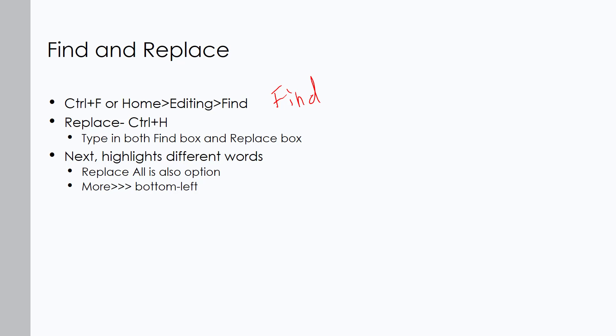The shortcut for Replace is Control+H, which opens the Replace box. Under the Home tab in the Editing group you can find both the Find and Replace features. You can use Next to highlight different instances and Replace All is an option — if you want to replace every instance of a word instead of clicking Replace one at a time, you can do Replace All. The next option, the More button, is extremely important and we'll look at it in more depth.